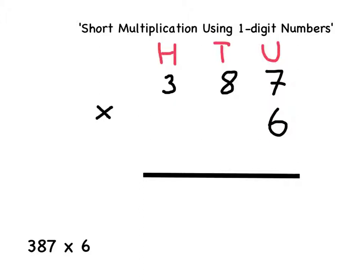For the first part of completing the short multiplication, I must look at the units. That's 7 multiplied by 6. 7 multiplied by 6 gives me an answer of 42.